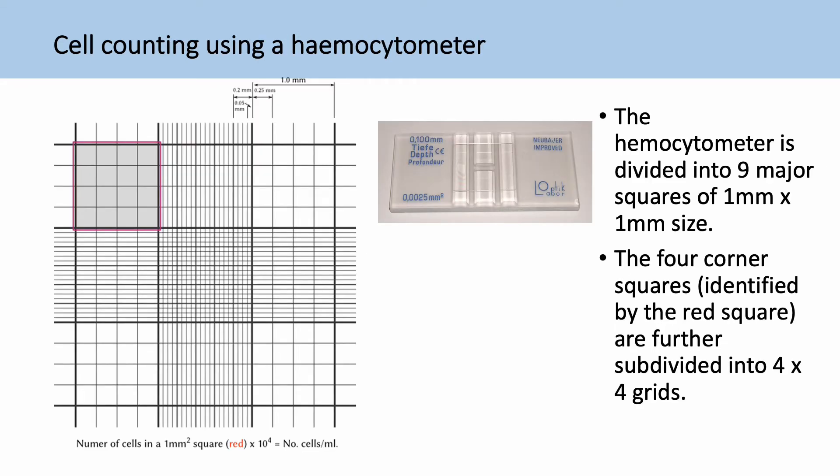So using a hemocytometer, it's kind of a thick glass slide with a glass coverslip on top. And when you look at it under the microscope, you'll see that it's divided into nine major squares and the four corner squares are subdivided further into four by four grids. So here, here, here, and here.